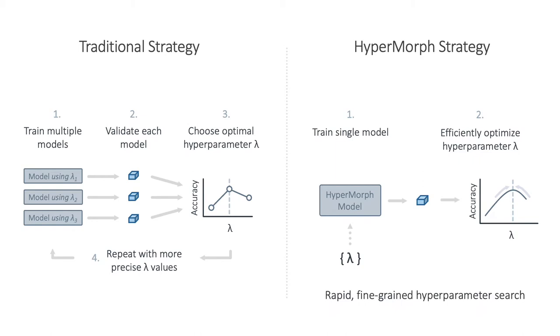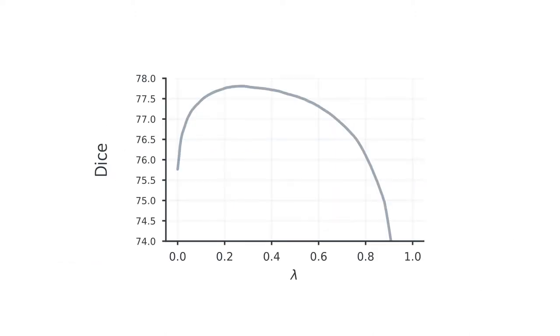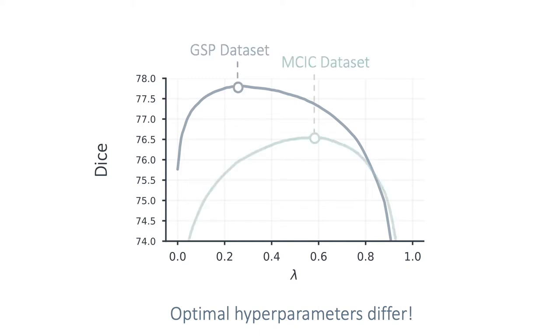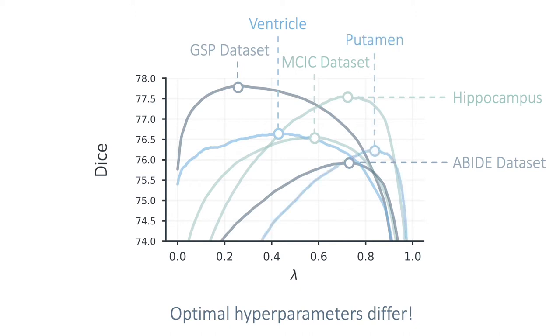This speeds up the search process and enables high-resolution hyperparameter selection at test time. This is important because the often overlooked reality is that there's no such thing as one true optimal hyperparameter value. In many cases, optima can differ across data type, subject set, registration task, and even anatomical region. So being able to adapt hyperparameters on the fly is essential.